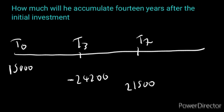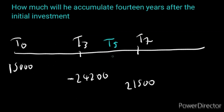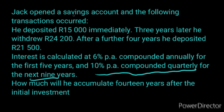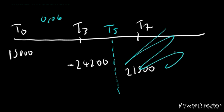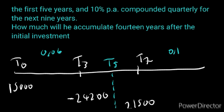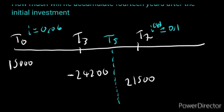The first portion (0 to T5) uses 6% per annum compounded annually — so i = 0.06, and we just write i since it's annual. The second portion (T5 onwards) uses 10% per annum compounded quarterly — so I4 = 0.1, which reminds us it's quarterly. This notation gives good timeline labelling and makes calculations easier.